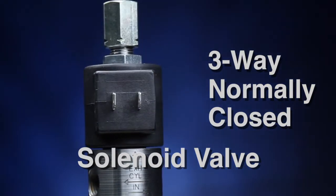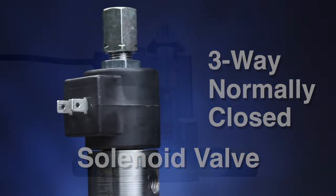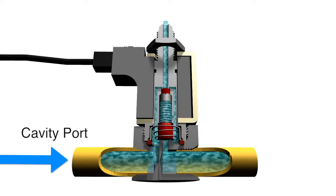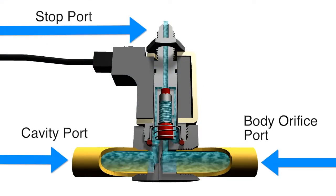A 3-Way Normally Closed solenoid valve has three pipe connections: the cavity port, the body orifice port, and the stop port.